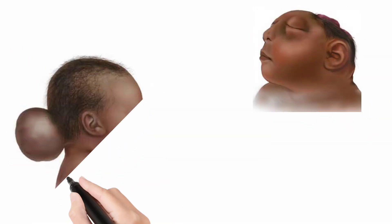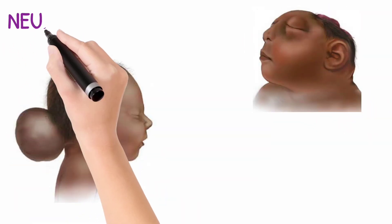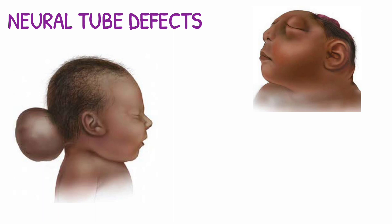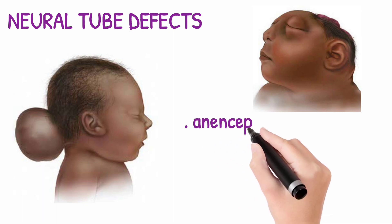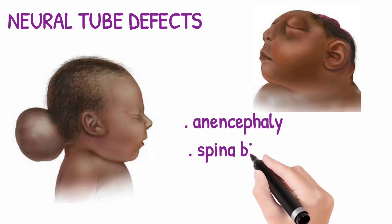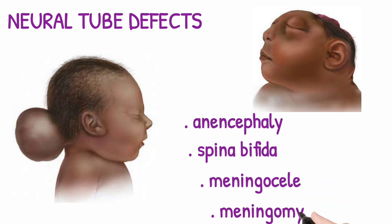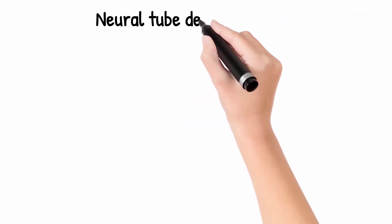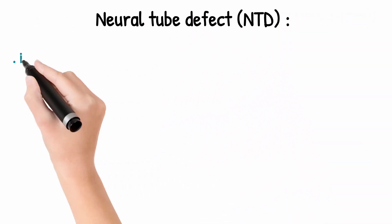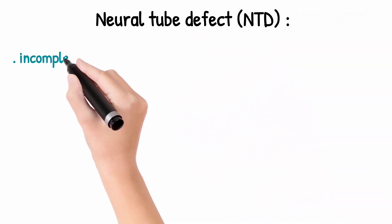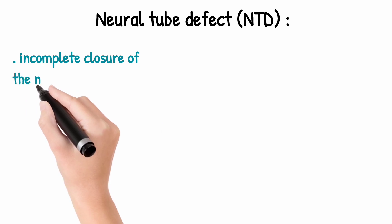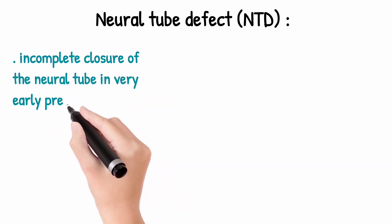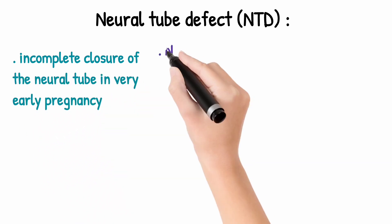Today we are going to talk about neural tube defects, mainly anencephaly, spina bifida occulta, meningocel, and meningomyelocel. Neural tube defects occur due to incomplete closure of the neural tube in very early pregnancy.